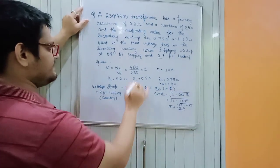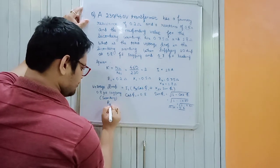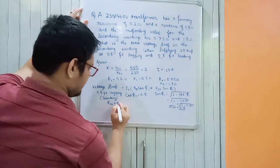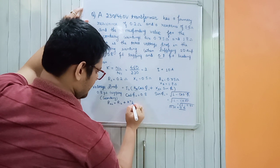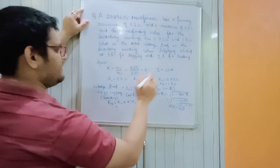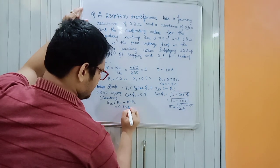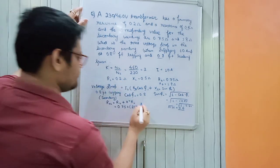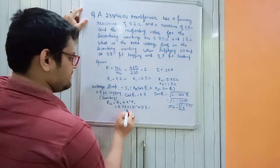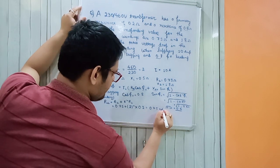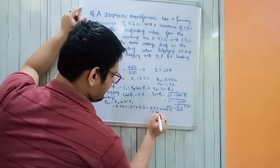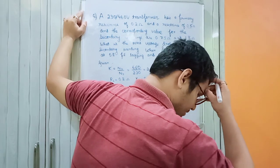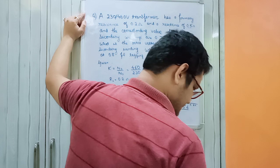Now we calculate R02. R02 = R2 + K² × R1 = 0.75 + (2²) × 0.2 = 0.75 + 4 × 0.2 = 0.75 + 0.8 = 1.55 ohm.